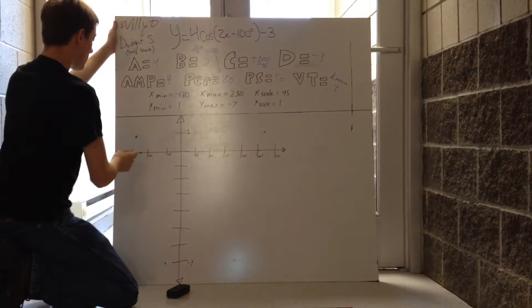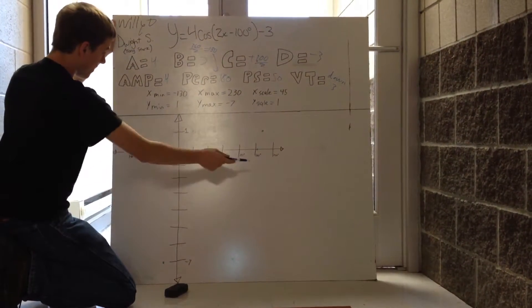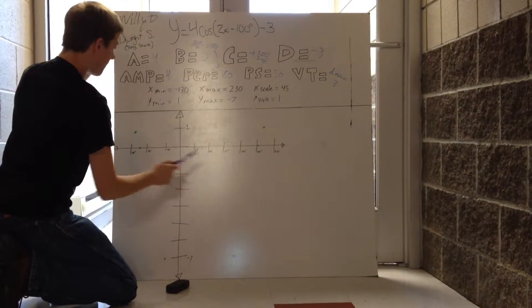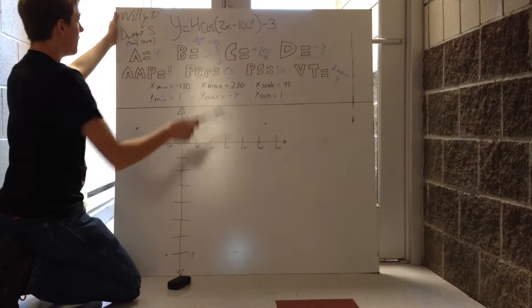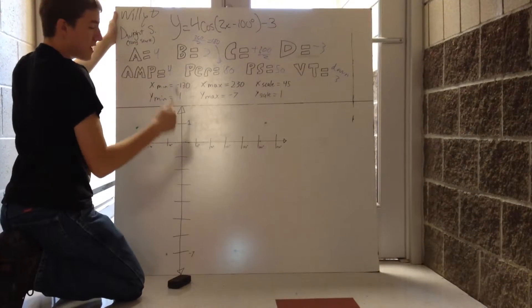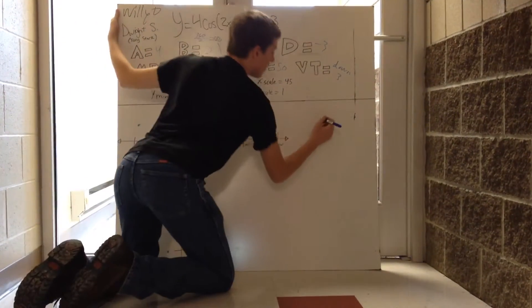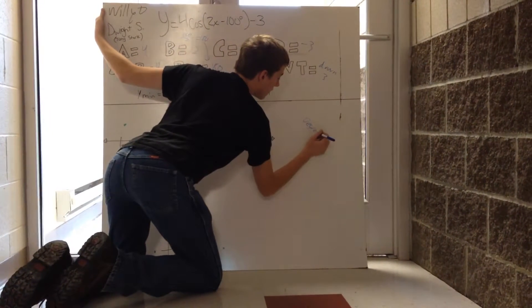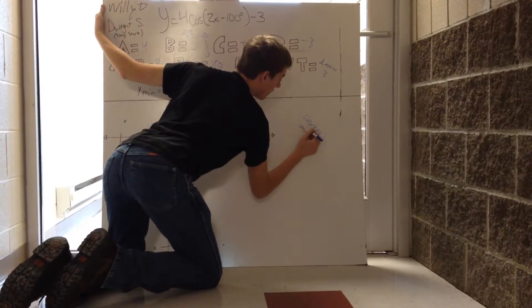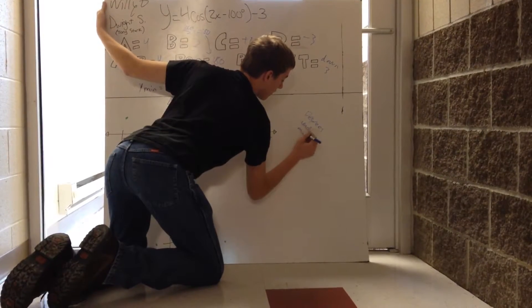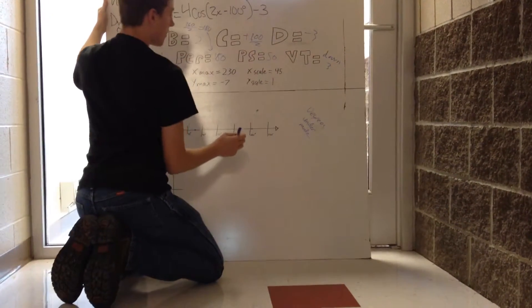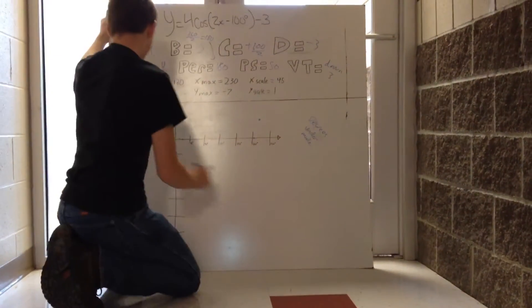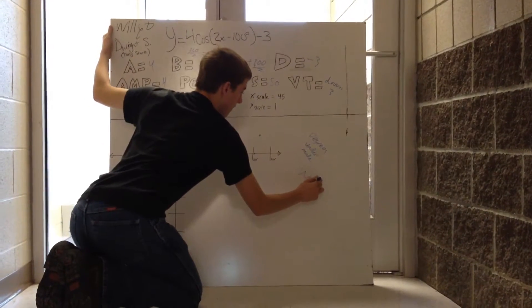And then for the graph, I've already plotted out a graph here and I've already marked out all the points. So basically, all you have to do is plug this into your calculator. Make sure that it is in degrees under mode for it to appear proper, not radians.